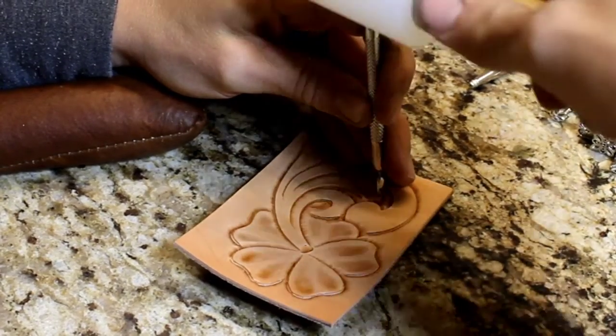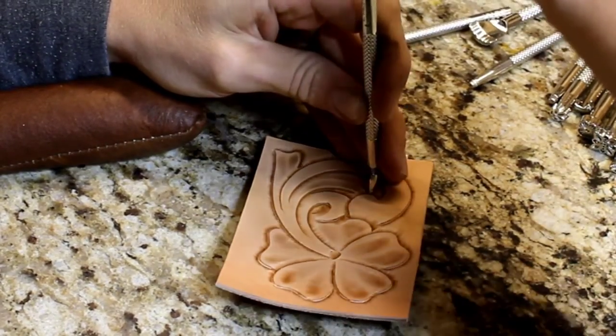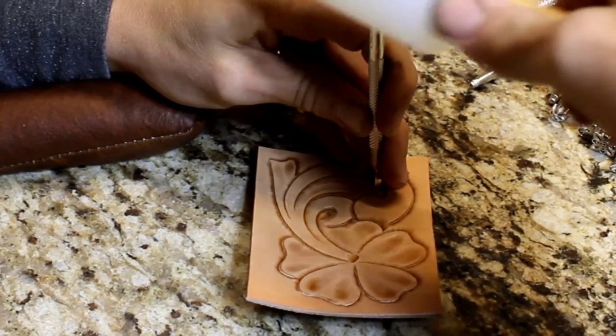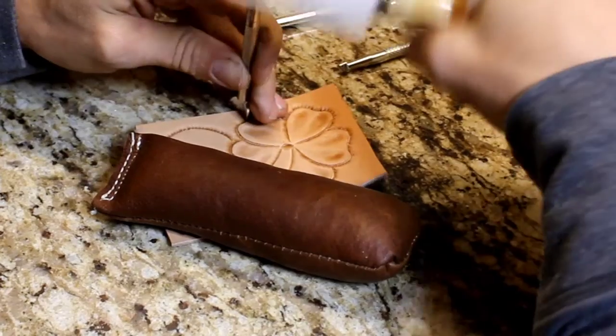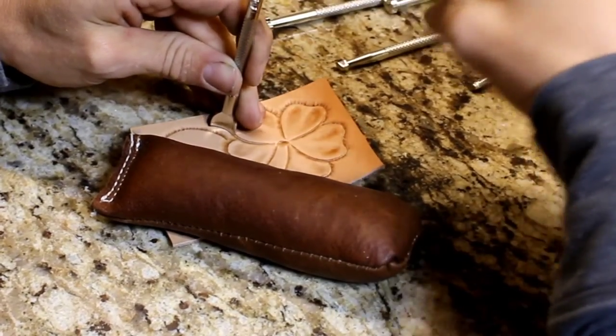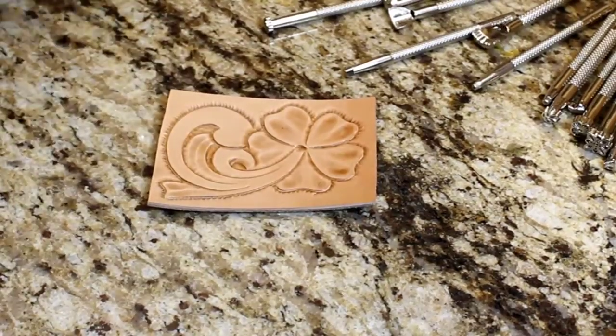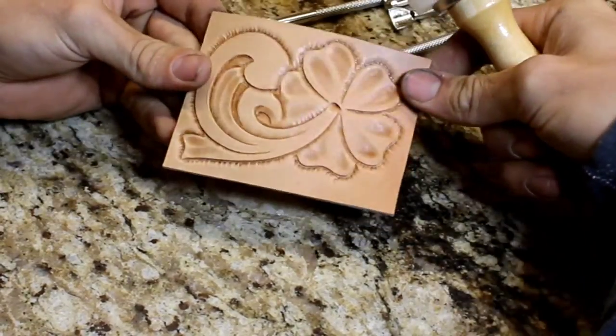And this didn't really come with a background tool, so I used that wider veiner to kind of knock down the background. And the way it was shaped has that curvature to it. It helped me get down in all those little places that would otherwise be hard to get into. But I think that turned out pretty decent.